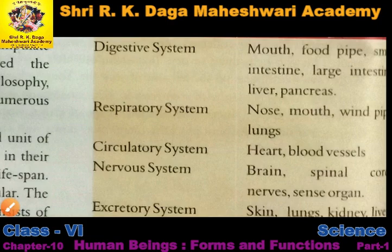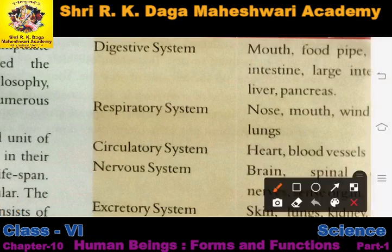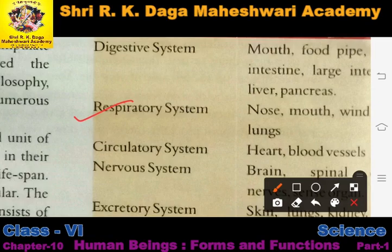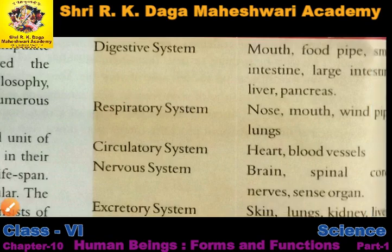If we talk about the respiratory system - when we inhale oxygen and exhale carbon dioxide, and our food is broken down to provide us energy - that system is called the respiratory system. The organs in the respiratory system are the nose, mouth, windpipe and lungs. Then there is the circulatory system.